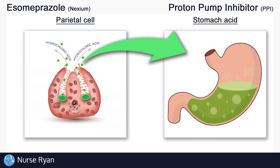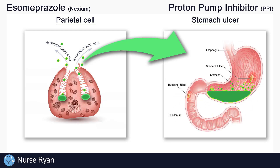Acid in general is a good thing to have in the stomach. However, some problems can start to occur if this acid content gets too high. Excess stomach acidity can actually damage the lining of the stomach, leading to things like inflammation or even ulceration of the stomach or the intestine. This is where proton pump inhibitors come in.